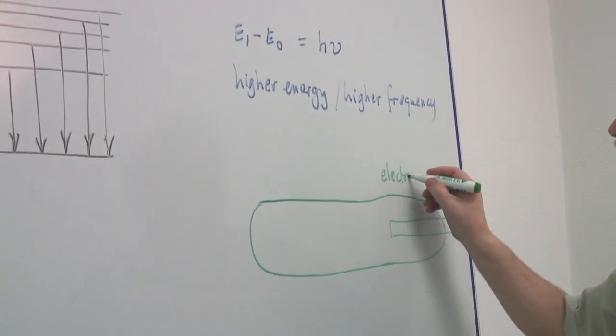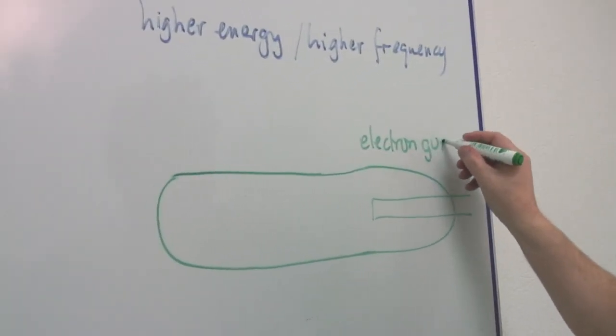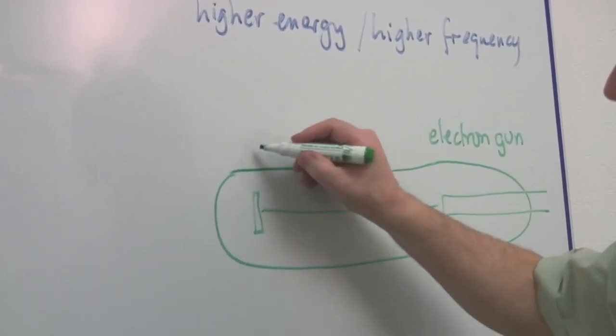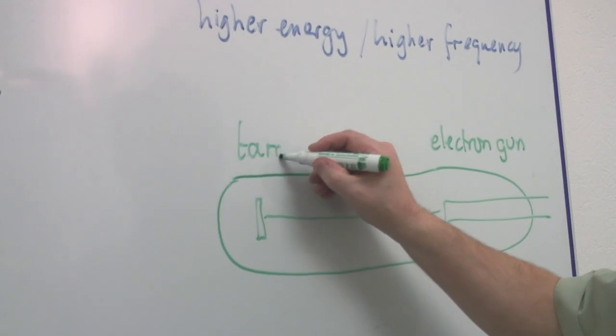This is it here. And this electron gun shoots electrons through to a thing called a target, logically.